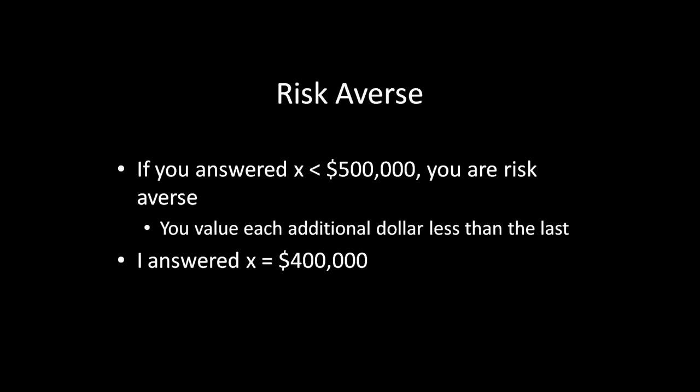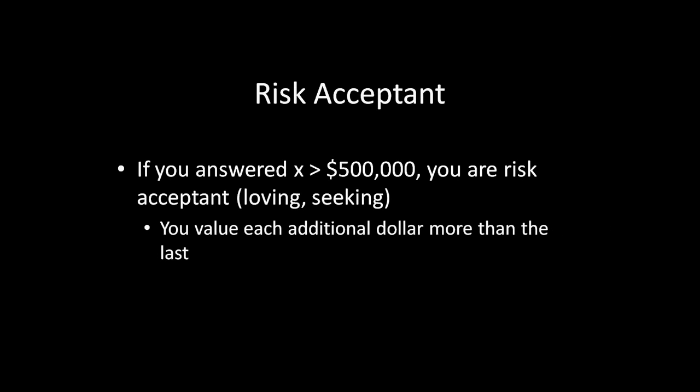The last of the three categories is risk acceptant — some people call it risk loving or risk seeking, but it's all the same thing. If you answered X greater than $500,000, you would fall under this category. What this means is that you value each additional dollar more than the last. Very few people report these risk acceptant preferences in this experiment. Risk acceptant behavior is like a compulsive gambler. When you're dealing with this high of stakes, you really don't see very many people willing to exhibit that kind of preference.